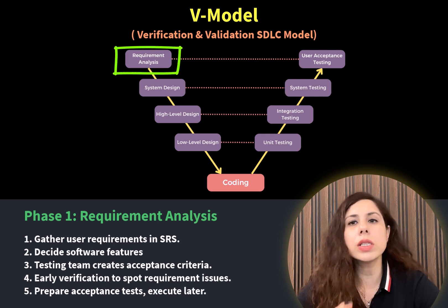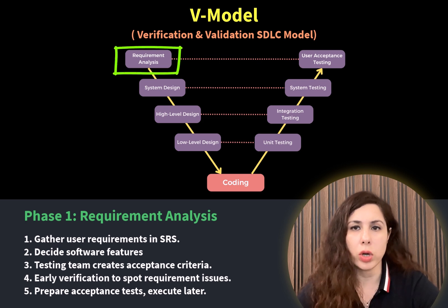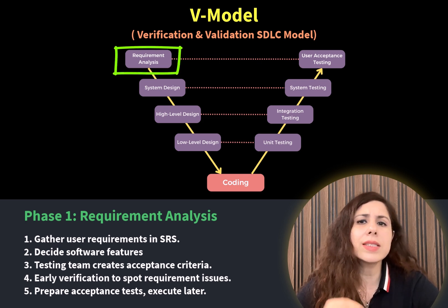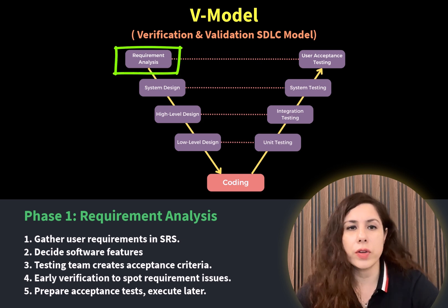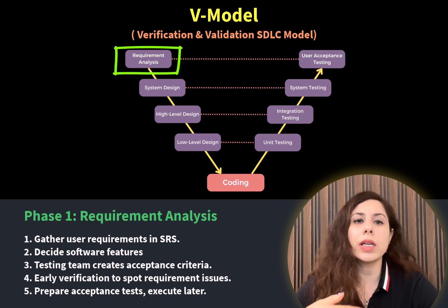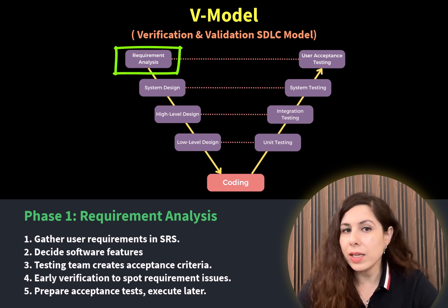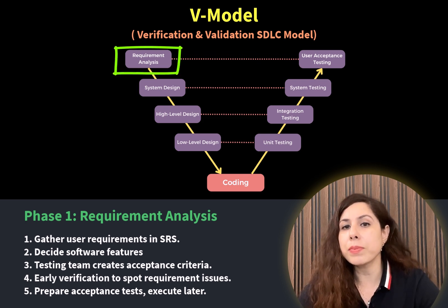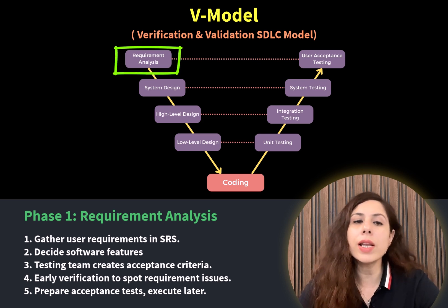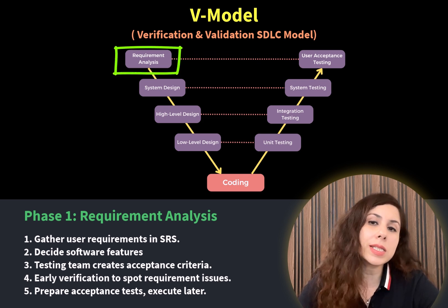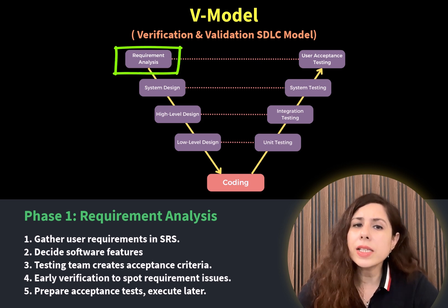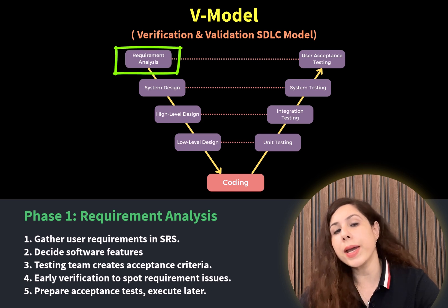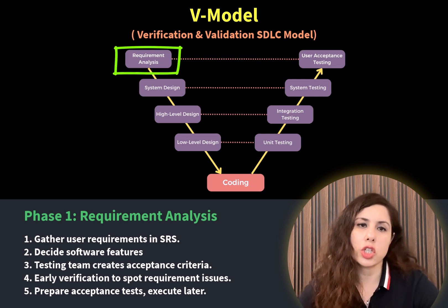Till now, this phase is similar to the Waterfall Model. But in V-Model, there is something extra — testing also gets involved in this phase. The testing team goes through the requirement specifications in parallel and creates acceptance criteria that they will execute in acceptance testing, which is the last phase. But in this phase, they start preparing for it based on the requirement specifications.